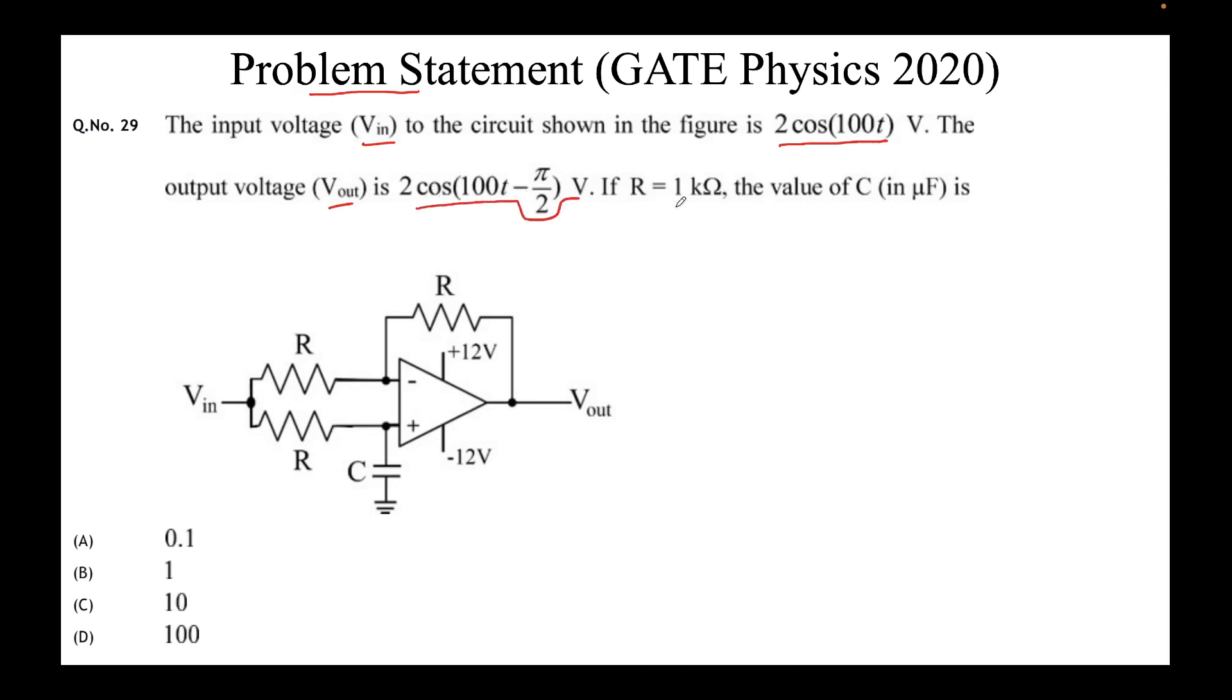So that's a phase shift of 90 degrees. If R equals 1 kilo ohm, the value of capacitor C in microfarads is, and the four options are given: 0.1, 1, 10, and 100.